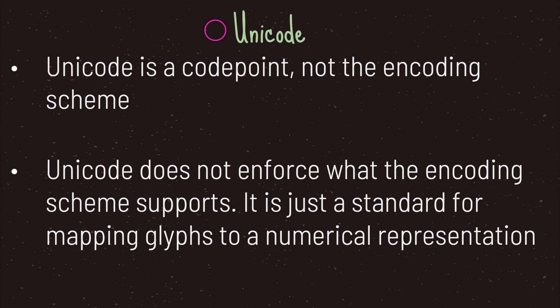One thing to keep in mind is that Unicode is a code point, not an encoding scheme. ASCII was both a code point and an encoding scheme, whereas Unicode only cares about being a code point. This means Unicode does not enforce what the encoding scheme supports — it is just a standard for mapping glyphs to a numerical representation.